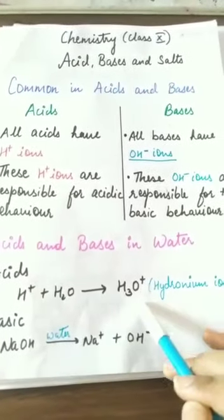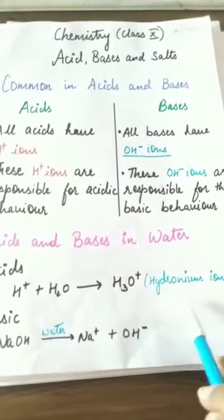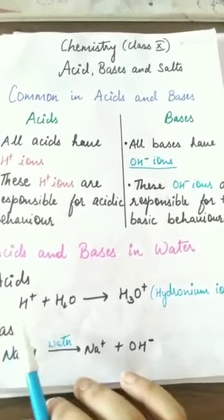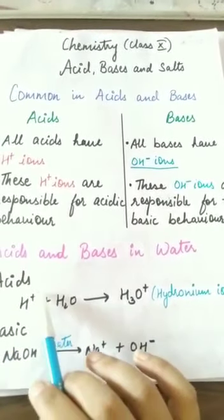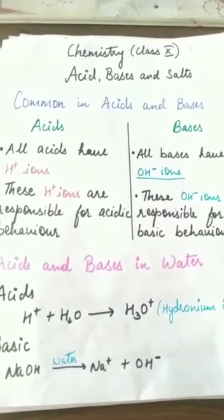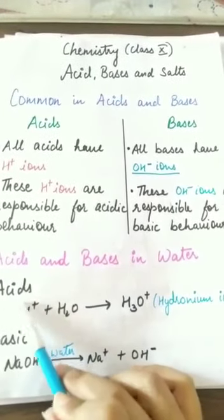The H+ ion of the acid combines with water to give H3O+ ion, and this ion is called hydronium ion. H+ ion cannot exist alone, so it always gets combined with water and forms hydronium ion.